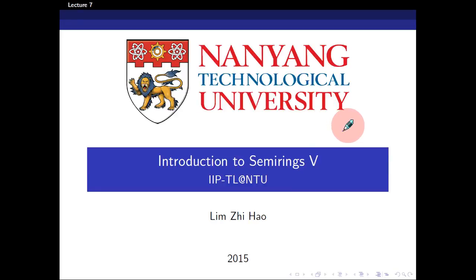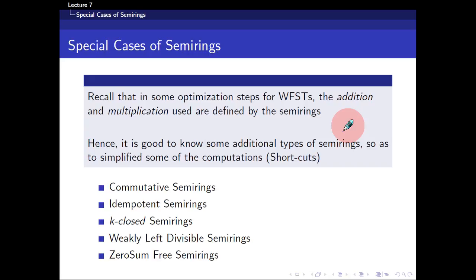Hi everyone, welcome to the seventh lecture of the series. In this presentation, I'm going to go through some of the special semi-rings and their properties. In certain steps of optimization of weighted finite-state transducers, there are special properties of semi-rings that we try to take advantage of to establish certain shortcuts. These five additional properties are commonly used: commutative semi-rings, idempotent semi-rings, k-closed semi-rings, weakly-left-divisible semi-rings, and zero-sum-free semi-rings. These semi-rings are special and they aid us in the optimization of our transducers.